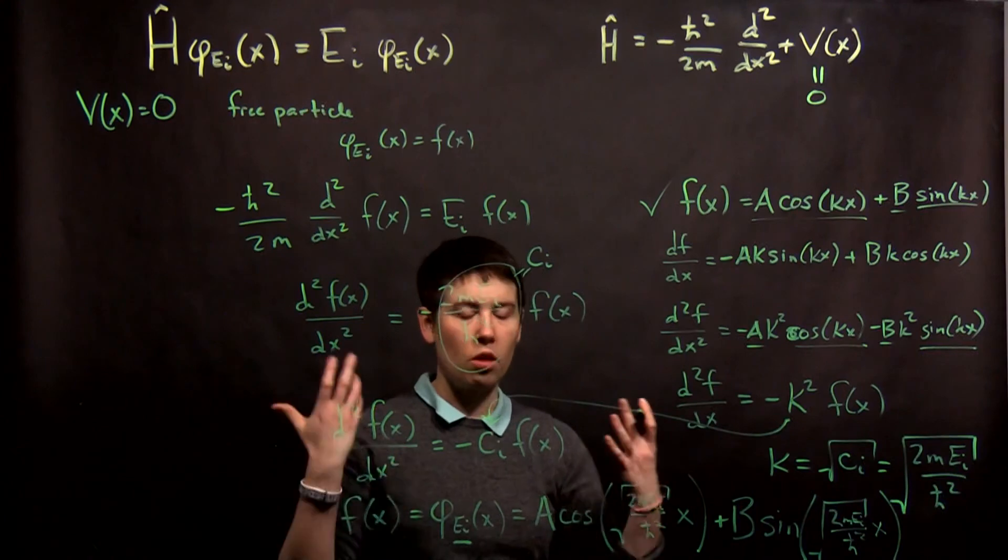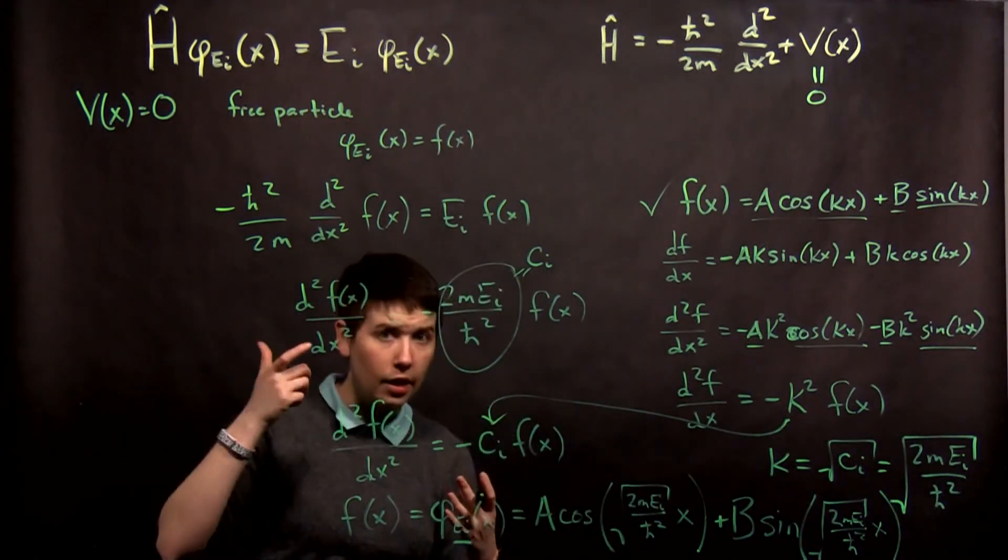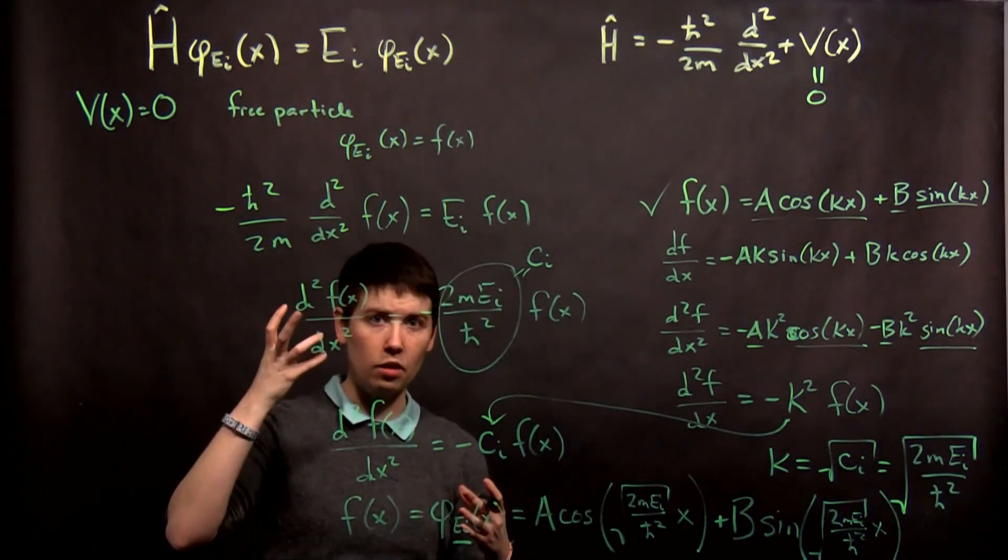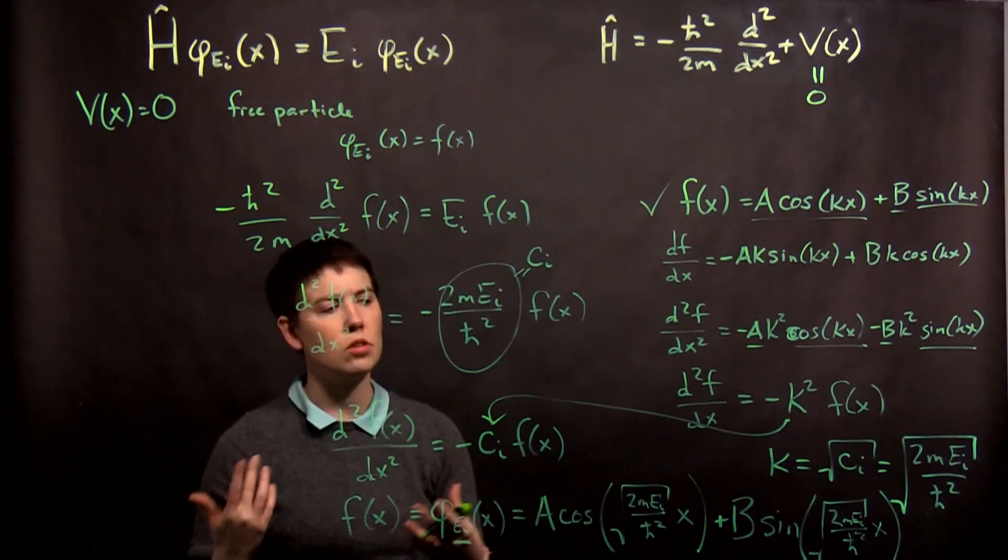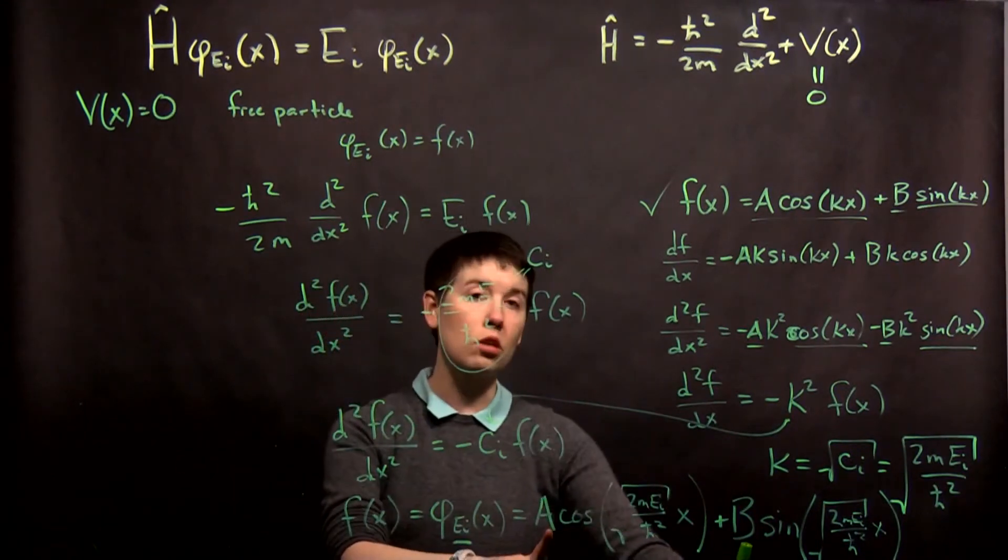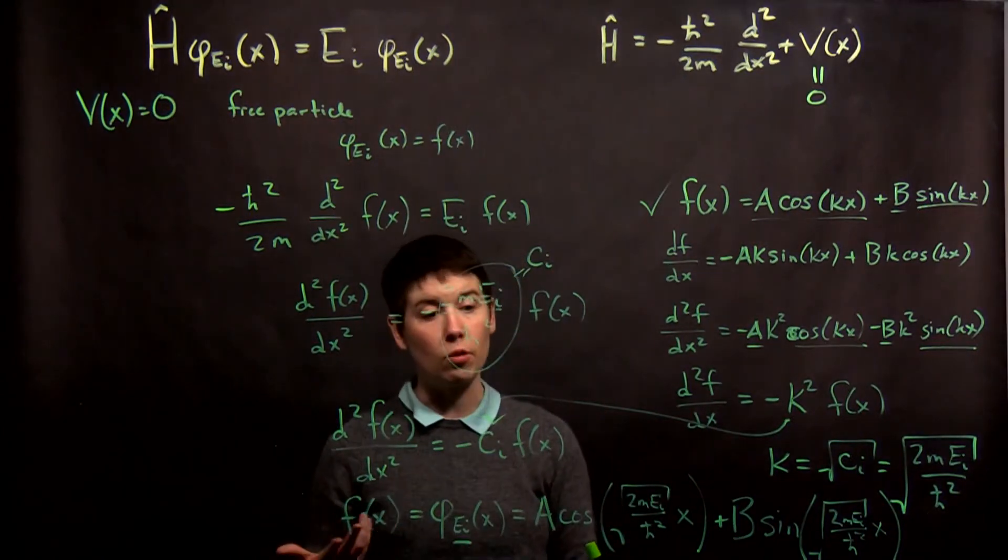So in this case I solved it with cosine and sine. You can also actually solve it with e to the i, e to the i theta x, where again you're going to get constraints on theta, and you'll have to have a positive one and a negative one. Notice here that we have two unknowns and you would use the boundary conditions to figure those out.